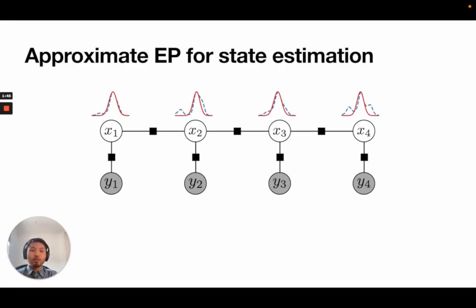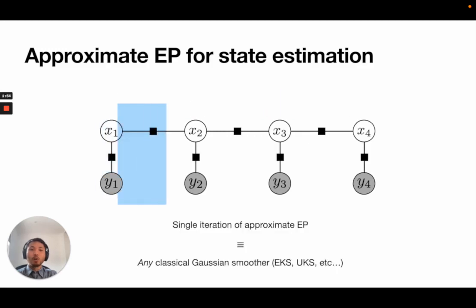A main contribution of our paper is to prove that any classical non-linear Gaussian smoothers, such as the extended Kalman smoother or the unscented Kalman smoother, are equivalent to a single forward-backward iteration of this approximate EP scheme. This makes our approach strictly more general than these classic techniques.